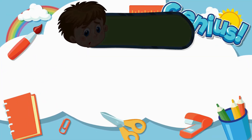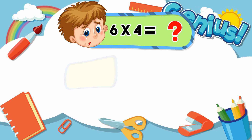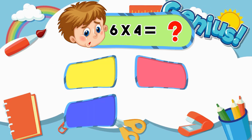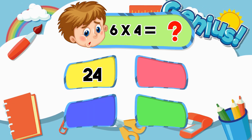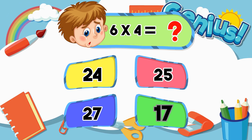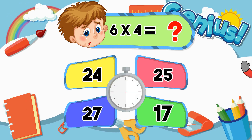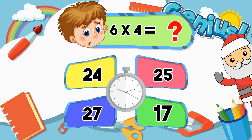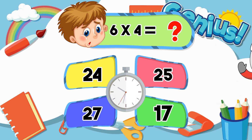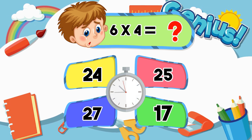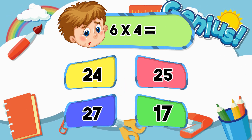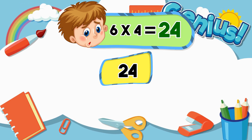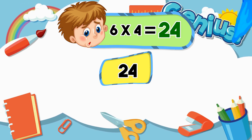What is 6 times 4? Options: 24, 27. Answer: 24.